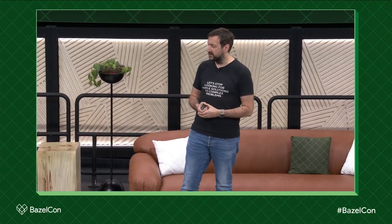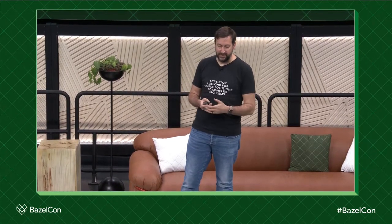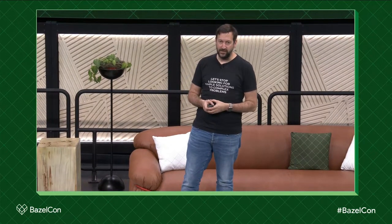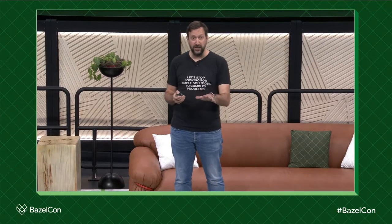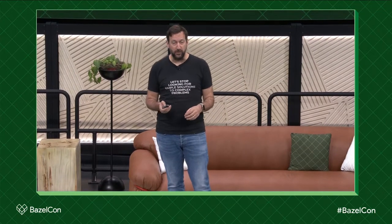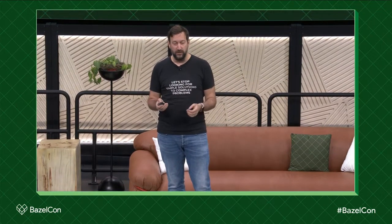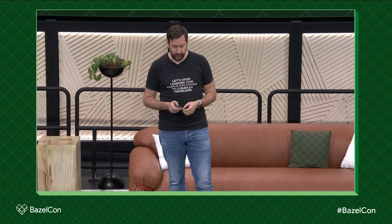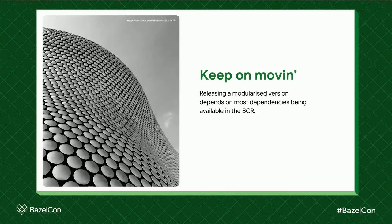I thought this would be easy. It's not. "That's the way it is." We do want to release a modernized version of Contrib Rules JVM, but what we need is that all of our transitive dependencies should also be in the BCR.